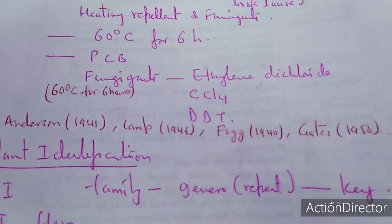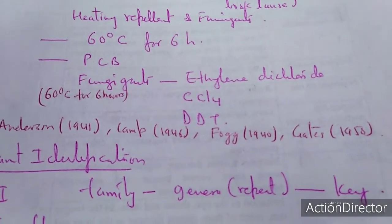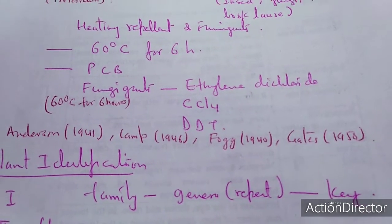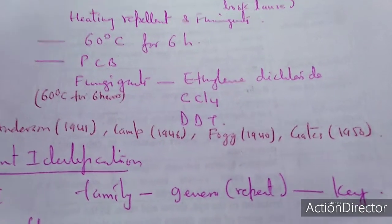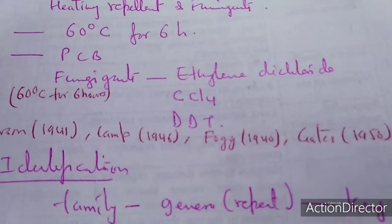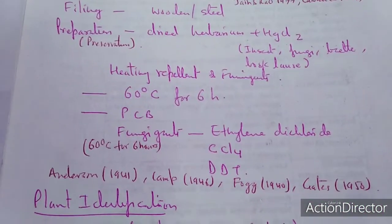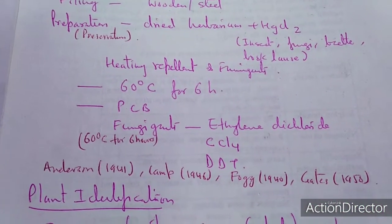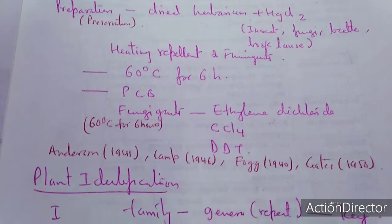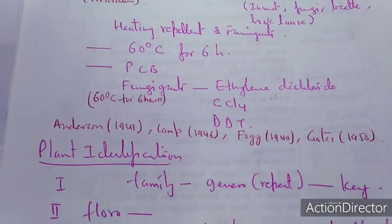Anderson 1941, CAMP 1946, FOG 1940, and the Gates method 1950 are among the recognized methods for herbarium preservation.